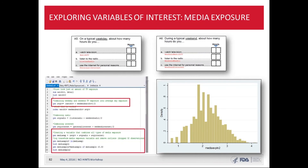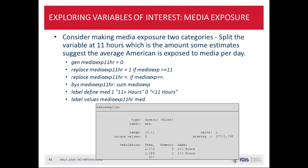In addition to looking at media exposure continuously, we decided to break it into two categories. One estimate found the average American is exposed to 11 hours of different types of media per day, so we used that as a cut point. This shows the commands used and the resulting output — the breakdown of respondents exposed to more or less than 11 hours.